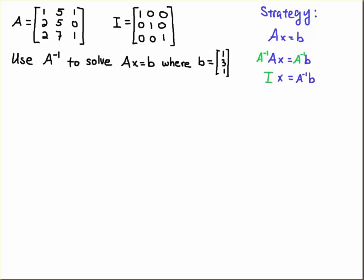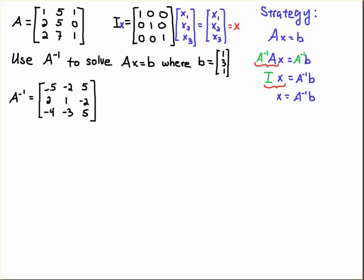And on the right hand side we respect the order of matrix multiplication, matrix vector multiplication, and we keep the A inverse on the left. That's important. And realize that the identity matrix times a vector just gives you the vector back again. Just like the identity matrix times a matrix gives you the matrix back again.